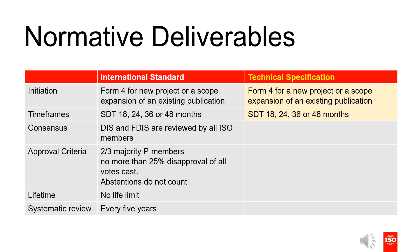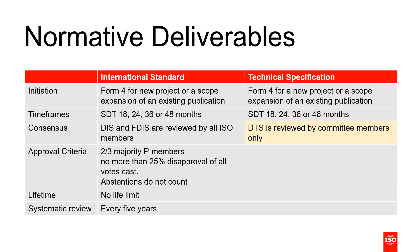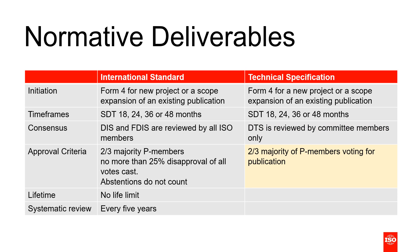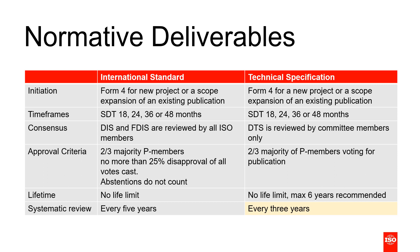Technical specifications, also known as TSs, have the same initiation and timeframes available, but require a lower level of consensus. The draft technical specification, or DTS, is only subject to a vote by committee members and just requires a two-thirds majority of P members voting for publication. Technical specifications also have no lifetime limitations, but they have to be reviewed every three years. ISO recommends TSs to have a maximum shelf life of six years, as it should be the goal of a committee to eventually convert the TS into a full international standard. Technical specifications also go through an automated systematic review ballot every three years.